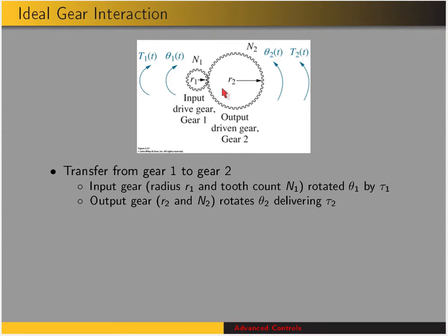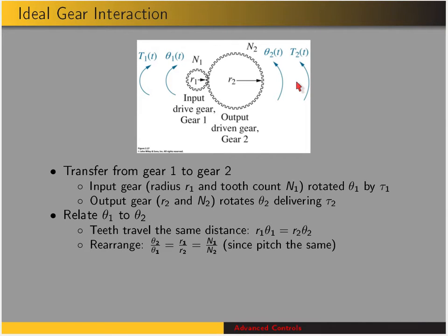The input gear is rotated by applying a torque tau 1. The output gear has radius R2 and tooth count N2, a rotation of theta 2, and an output torque tau 2. Those are all the terms we're looking at.